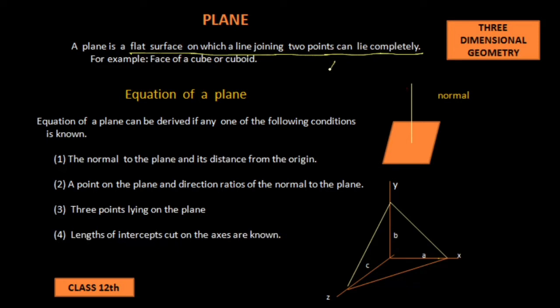For example, this is a flat surface over which this line AB is lying completely. Then this flat surface is called a plane.